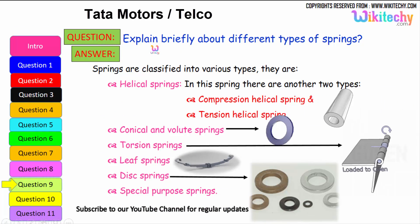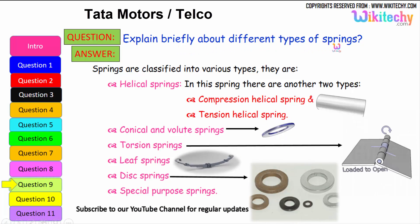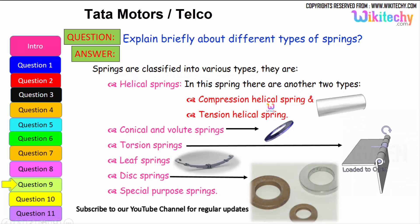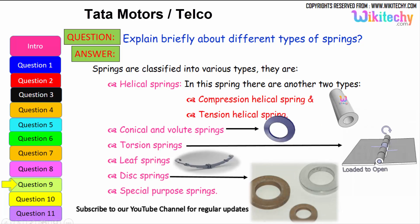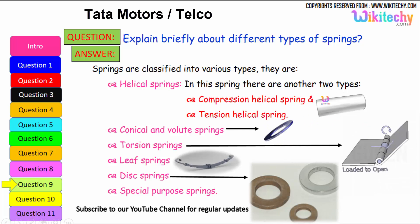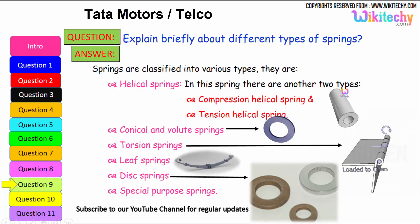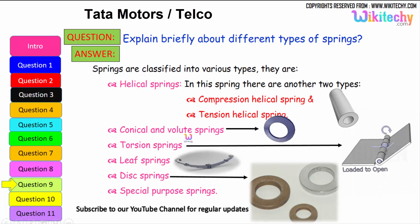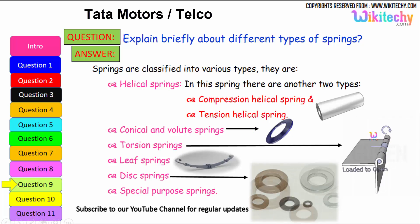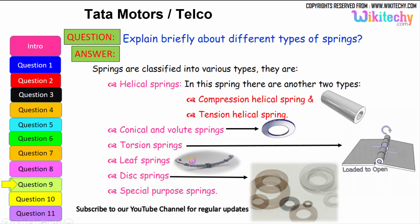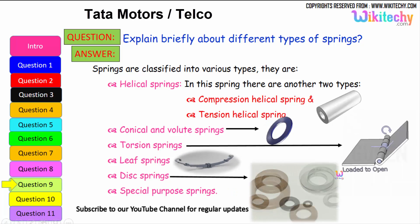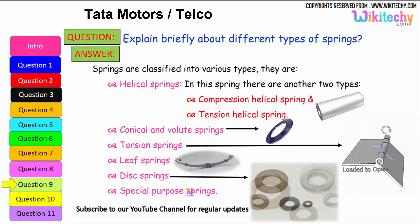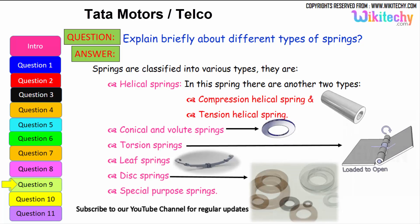Let us see briefly the different types of springs. Springs are classified into various types: the first is helical springs, which are further divided into compression helical springs and tension helical springs. Next are conical volume springs, torsion springs, leaf springs, and disc springs. There are also additional special purpose springs. These are the different types of springs available.